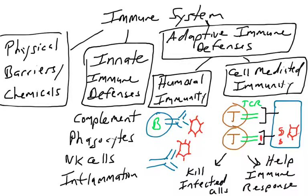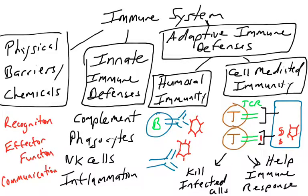When a T cell activates, depending on the type of T cell, it can either kill the infected cell or boost the immune response. When we learn about immune system defenses, we talk about three themes: recognition — the immune system recognizes something that doesn't belong; effector function — once something foreign is recognized, effector function helps clear the infection; and communication — if a pathogen is recognized, we call for help and activate other immune defenses. We'll see these themes again with T cells, as we covered them in innate immune defenses and humoral immunity.